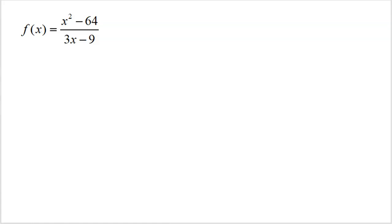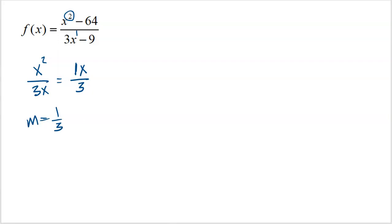For one more example, we recognize that the top degree is bigger than the denominator's degree — a sign of a slant asymptote. Dividing the leading terms: x squared divided by 3x gives 1/3 x. So we have a slant asymptote with slope 1/3, and the end behavior mirrors that linear polynomial — odd degree, positive leading coefficient, so right side is up and left side is down.